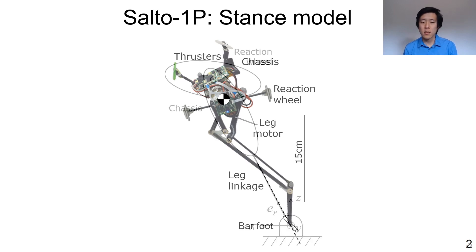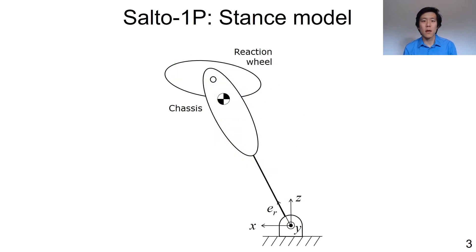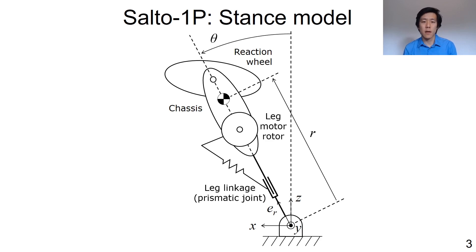While on the ground, Salto 1P very closely resembles the classic reaction wheel inverted pendulum, with a small modification. The leg linkage allows variation of the pendulum length, actuated by the leg motor. We are interested in the motion of the robot's center of gravity, and we parameterize its distance from the contact point with the ground as r, and we characterize its angle as theta. The two control inputs to this model are the torque of the reaction wheel and the desired angle of the series elastic leg motor.